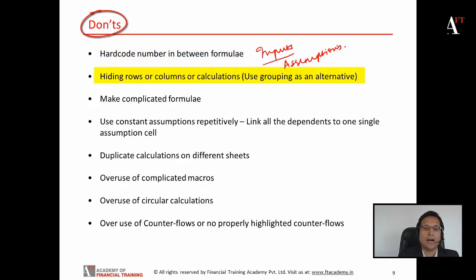At least create a separate cell for putting in the hard-coded numbers and then you can link these cells to the calculations. You should not hide rows or columns or calculations. They are difficult to trace for a user. You can use data grouping as an alternative. Instead of making complicated formulas, you can break them down into small steps.